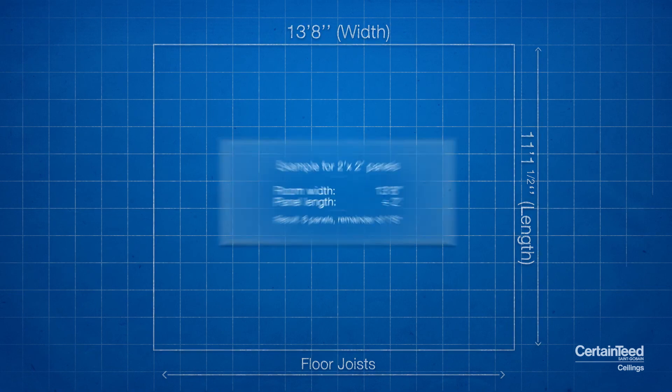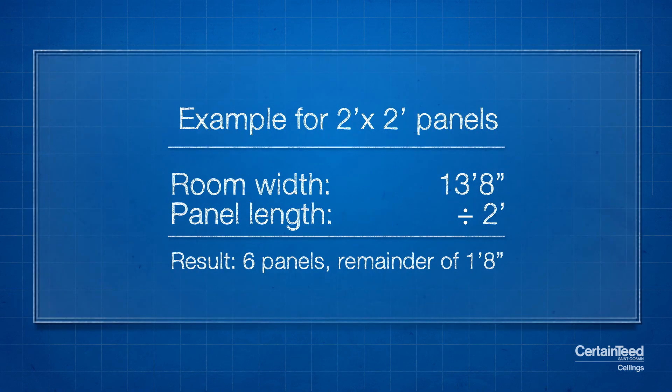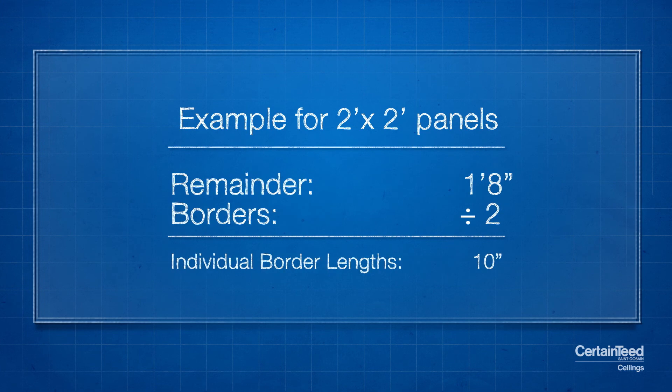in this case 13 foot 8 inches, and divide by the length of the panel. In this example, we are installing two foot by two foot panels, so the length and the width are both two feet. The result will be the number of full panels across the width of the room plus the remainder. Divide the remainder by two and you have your borders balanced.